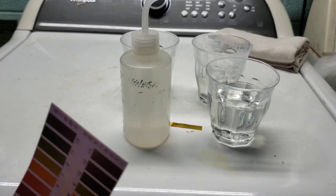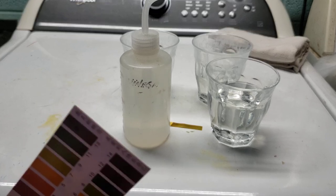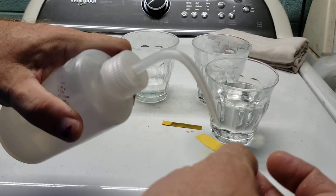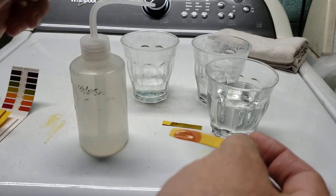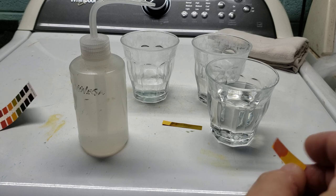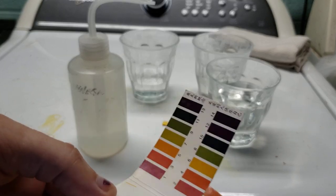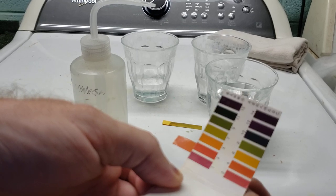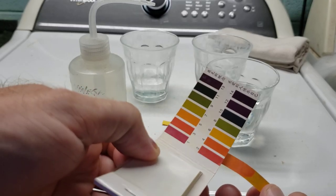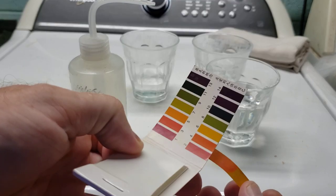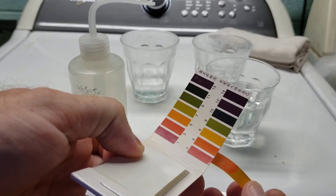And indeed, we put a drop of vinegar on there, and it looks somewhere between that orange of four and the red of three. So again, can't quite tell whether it's three or four, so I would call that three and a half.